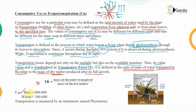For rice, which is a Kharif season crop, the transpiration ratio is 600 to 800. Taking the average value of 700, rice transpires on average 700 times the mass of the dry matter it produces. Similarly, for wheat, which is a Rabi crop, taking an average value of 450, wheat transpires on average 450 times the mass of the dry matter as water.